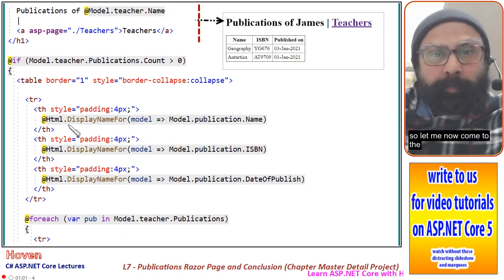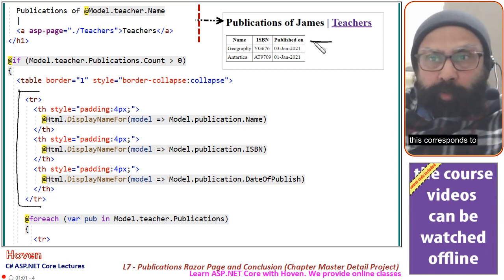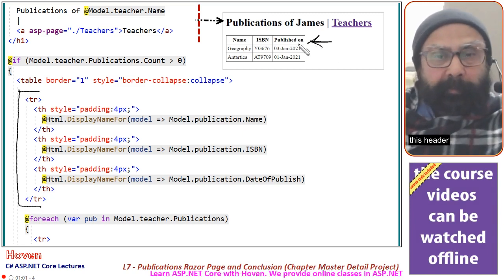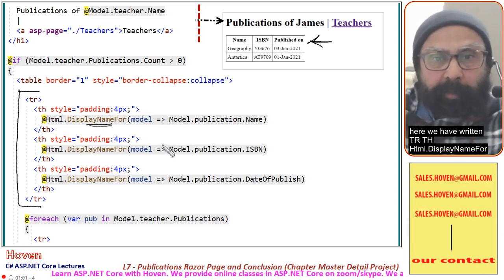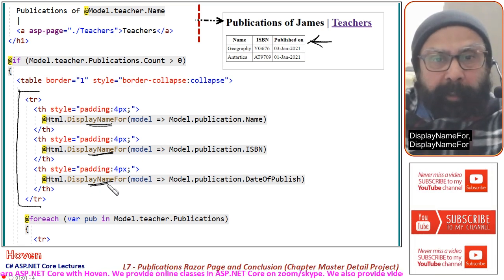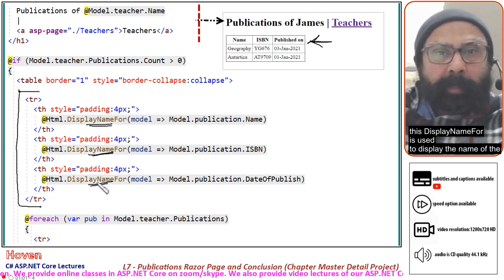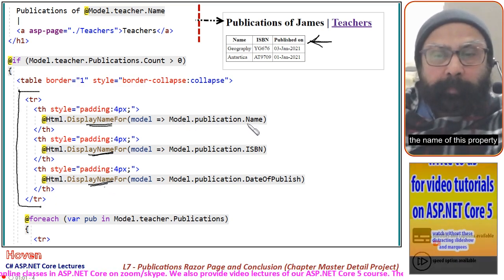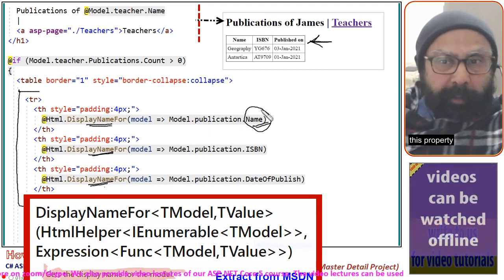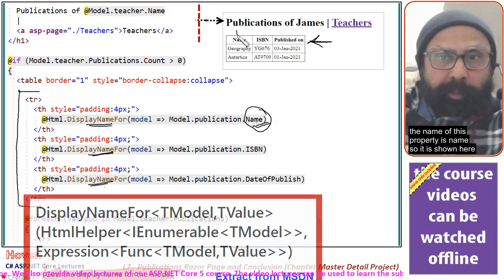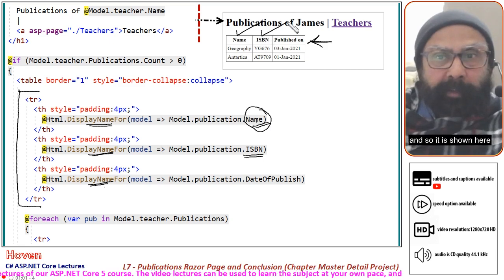Now let me come to the table. This is the first tr, which corresponds to the header. Here we have written tr, th, html.displayNameFor. DisplayNameFor is used to display the name of the property. For example, model.publication.name — the name of this property is 'name', so it is shown here. The name of the ISBN property is 'ISBN', so it is shown here.